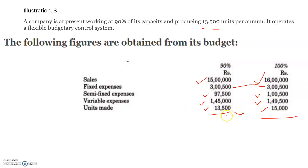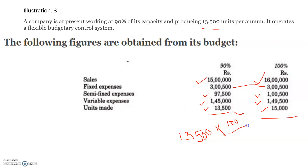To find the 100% capacity output, convert 13,500 into 100%: 13,500 × (100/90) = 15,000 units. So we are actually producing an additional 1,500 units.